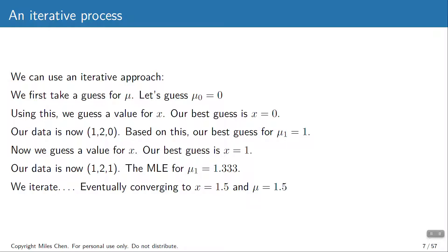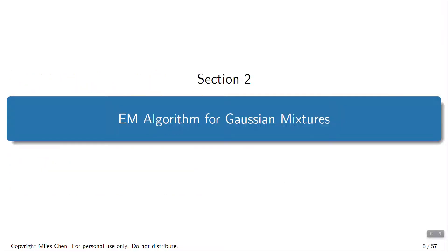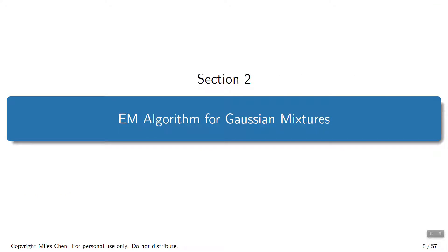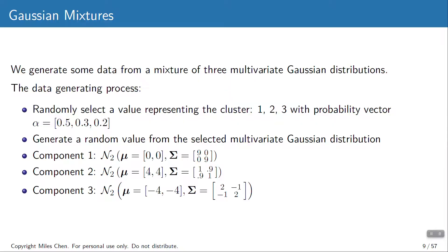That's a simple idea of the EM algorithm. You have a step where you get the values you would expect under your current set of parameters — that's the E step (Expectation). Then you find the parameters that maximize the likelihood of that data — that's the M step (Maximization). What values do you expect? What values would maximize the likelihood of what you're currently computing? That's the EM algorithm.